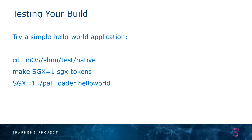To test your build once everything works, we have a Hello World example under libOS/shim/test/native. You can run make SGX tokens, and then instead of running Hello World directly at the command line as a regular process, you would instead run it inside the PAL loader with the SGX environment variable set to 1.